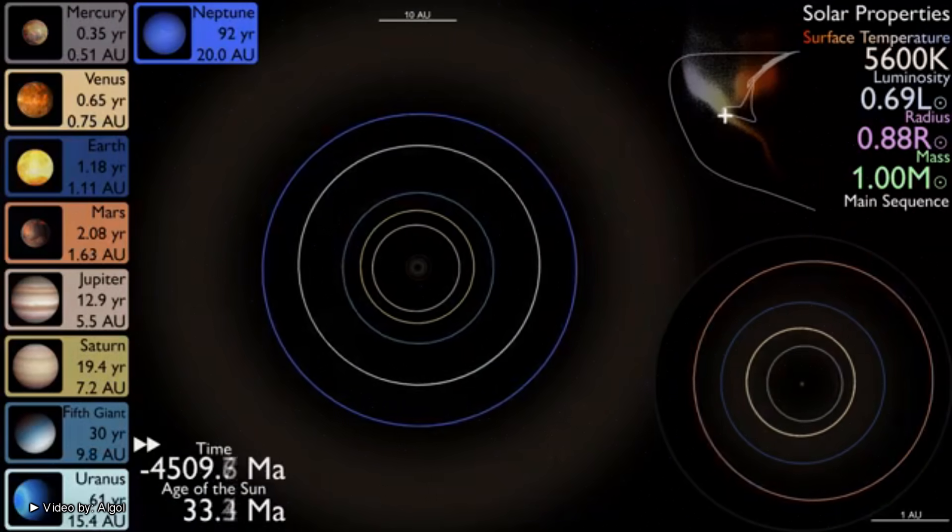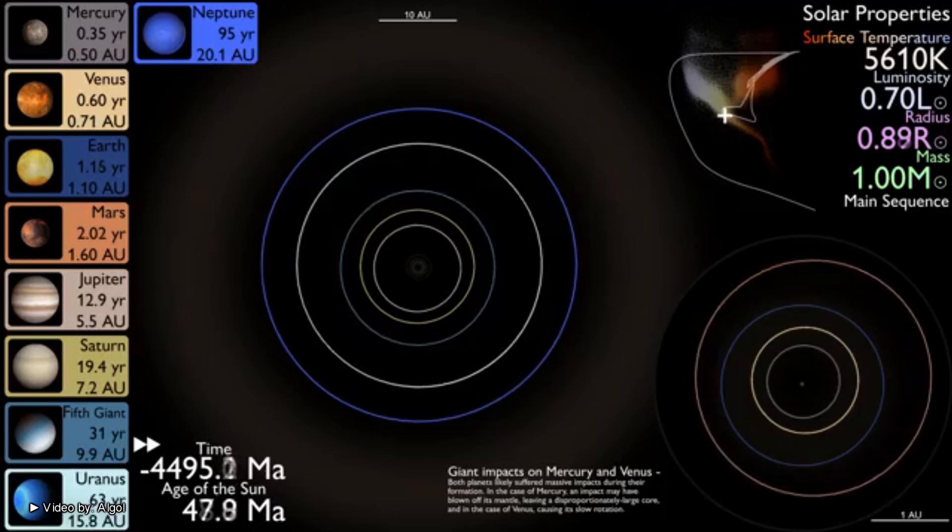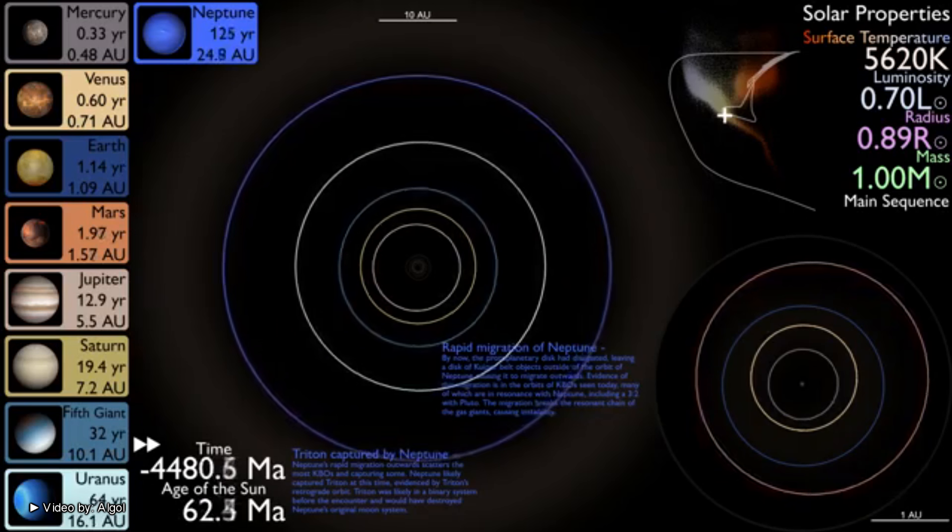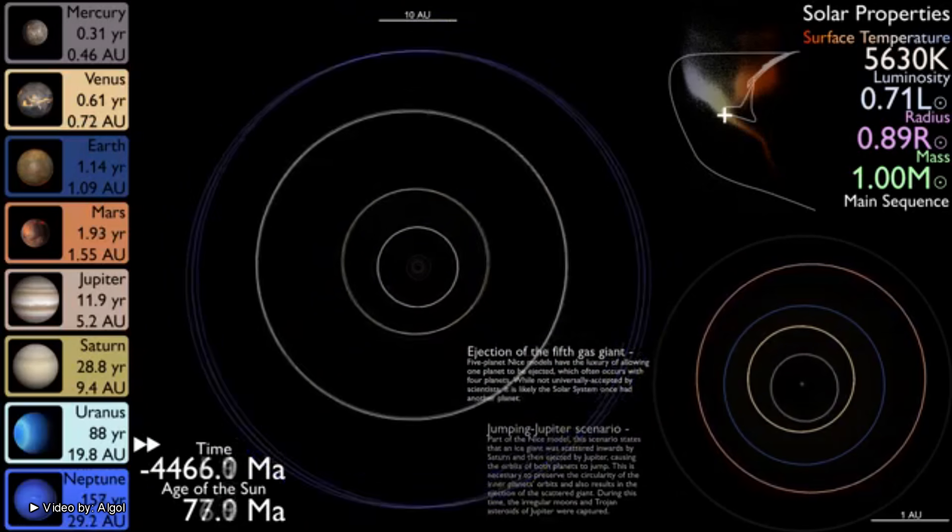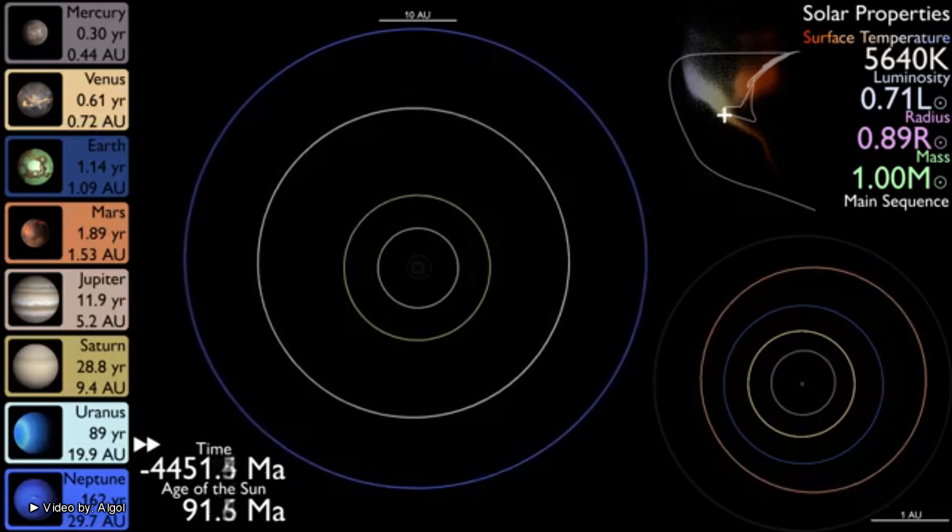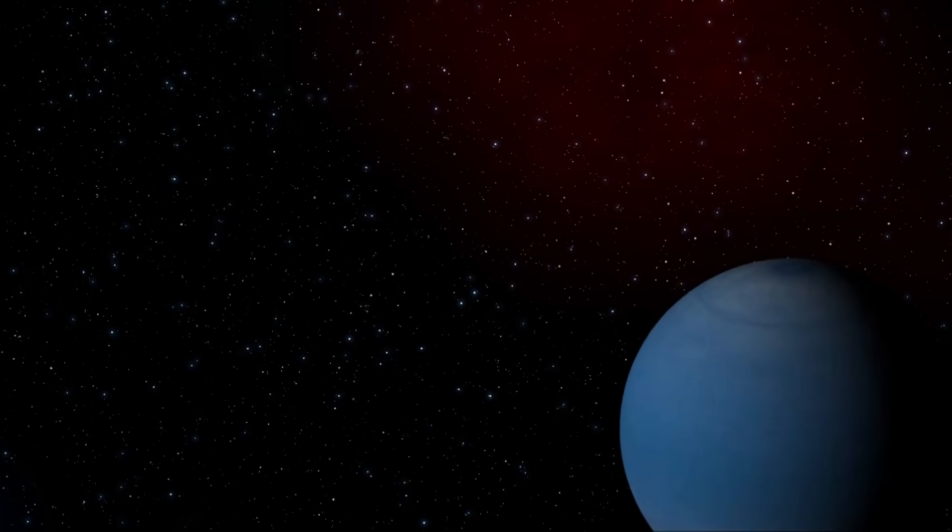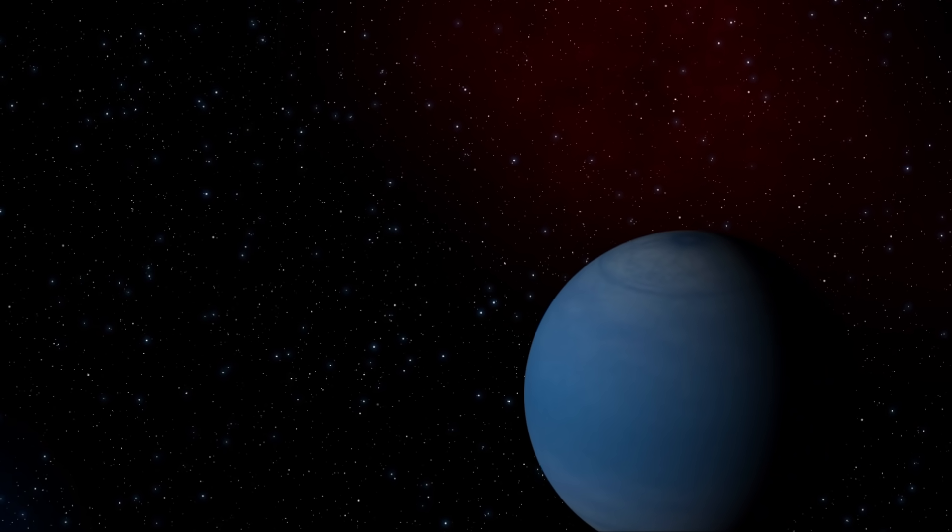Simulations featuring a fifth giant planet reproduce the orbits of the outer solar system at an average rate of 5% of the time, as opposed to 1% reproduction rate for only 4 giants.